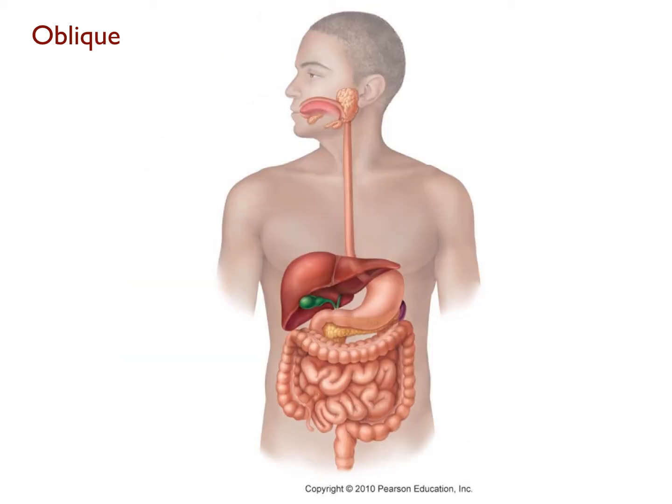The twelfth term on your list is one that you will most likely not see or use often, but it is one you should know because you may encounter it when looking at diagrams depicting specific cross sections of dissected organs. And that term is oblique. Oblique means that two structures lie diagonally from each other. For example, the gallbladder and the left lobe of the liver are oblique to each other.